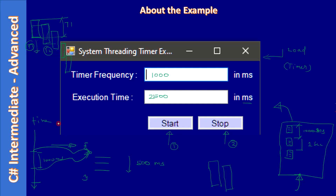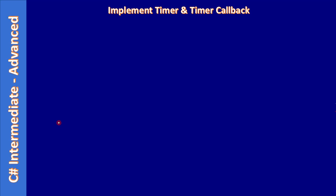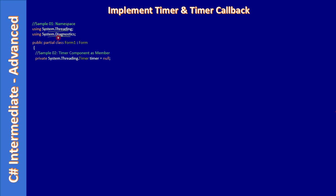Now we will go ahead with the implementation. To use a Timer, we need to include System.Threading. We are not using the Timer component — we are using the Timer class from System.Threading. That's why we included this namespace. In this example, we are going to print some messages in the debug output window, so we also include System.Diagnostics.